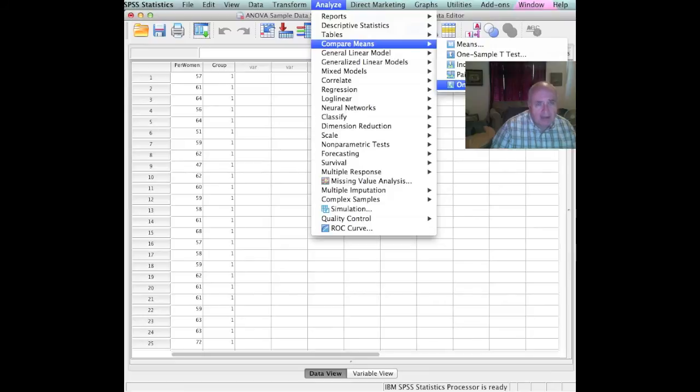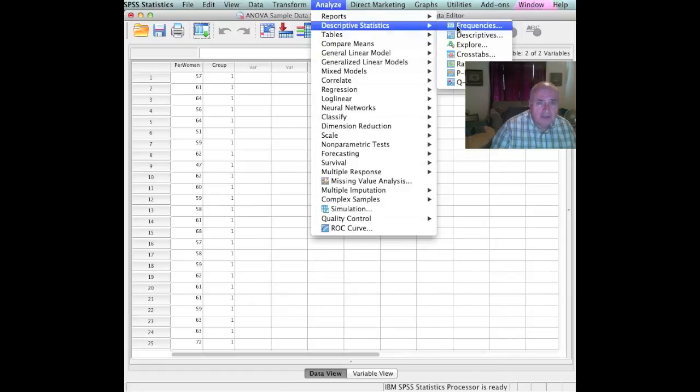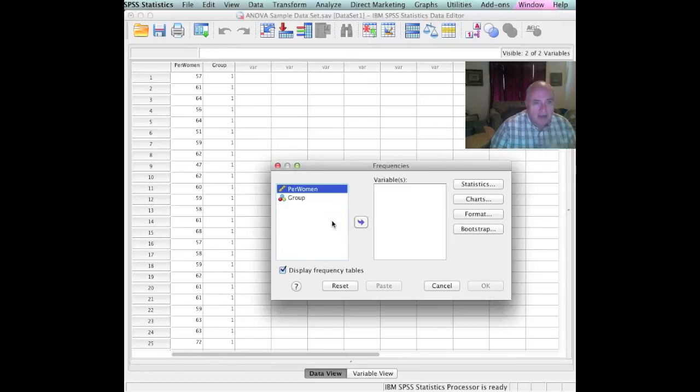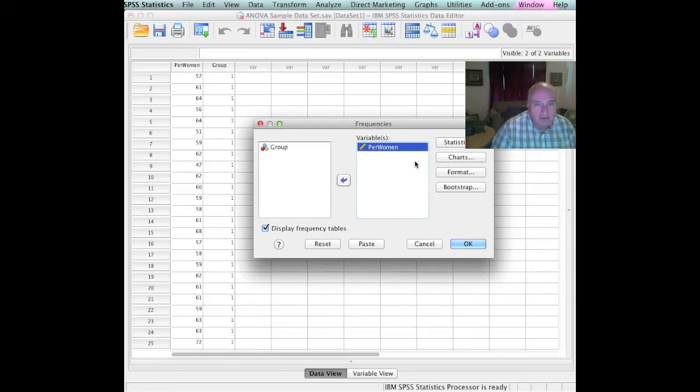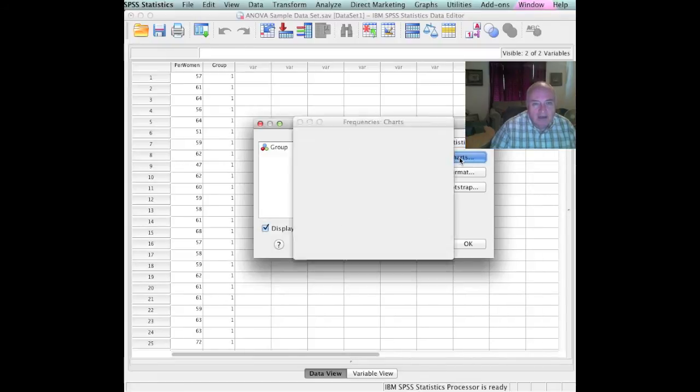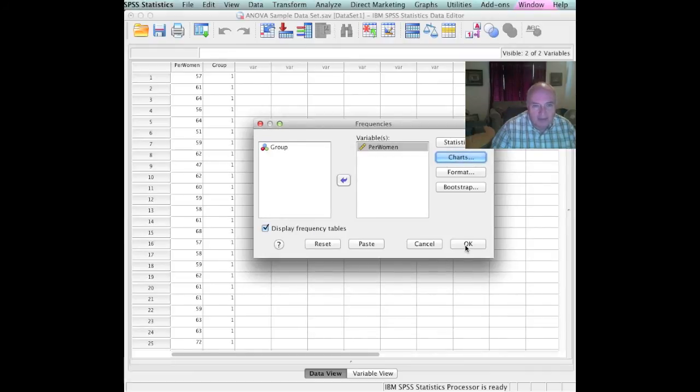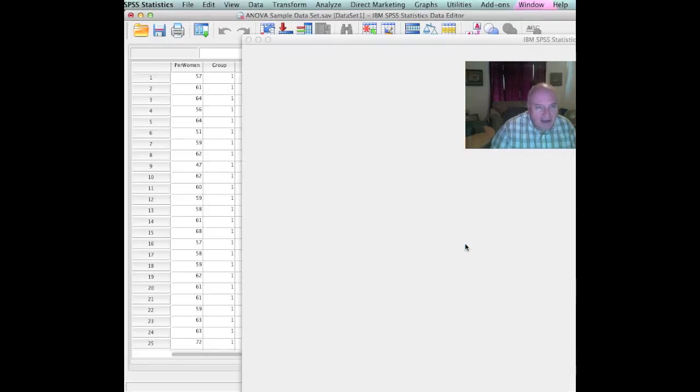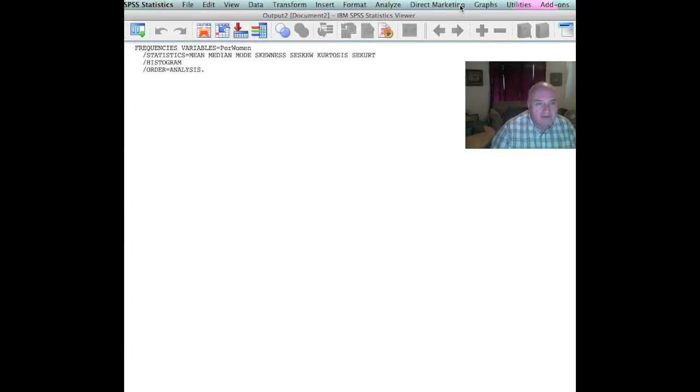Nor can we do skewness. So let's go to analyze, down to descriptive statistics, and we will select frequencies. Our variable is going to be our percent women. That's the one that we're worried about, the dependent variable. Let's go over here and let's see what it says. It gives us some chance for statistics. We can do the mean, the median, the mode. We can get the standard deviations and all of those if we want. But look over here: distribution, skewness, and kurtosis. We want that. Let's go to charts, do some histograms so we can see what it actually looks like. And we push the magic OK. And now we should have a very powerful readout.